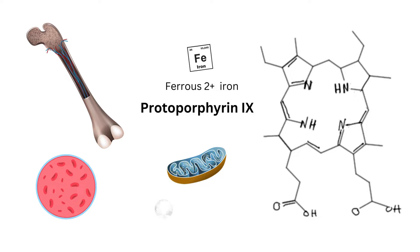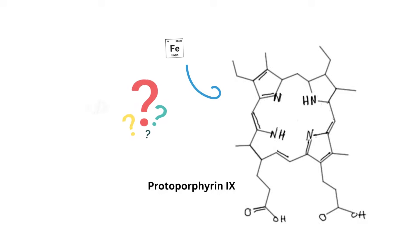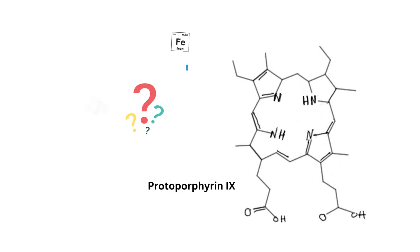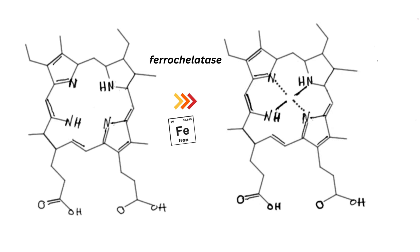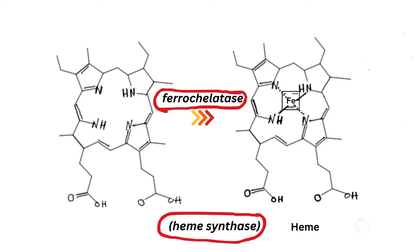Please refer to my other video on Introduction to Sideroblastic Anemias, Iron Deficiency Anemia, and Porphyrias for more detail of the biochemical pathway. How does ferrous iron in the 2-plus valence state get to the protoporphyrin ring? Ferrochela­tase, also known as heme synthase, is the key enzyme to chelate ferrous iron to the protoporphyrin 9 ring, forming heme.